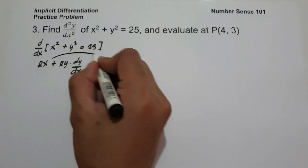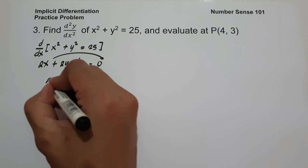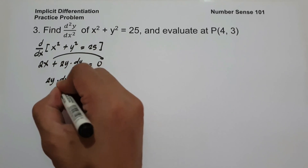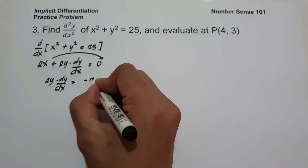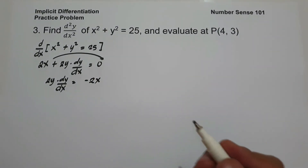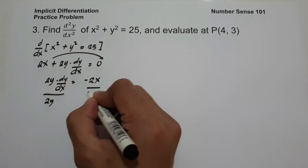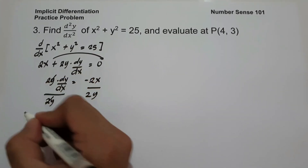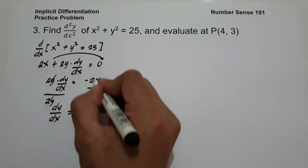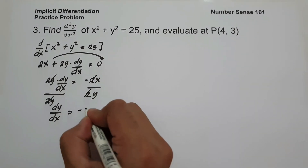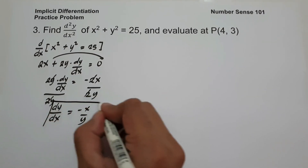Let us move 2x to the other side, giving us 2y times dy over dx equals negative 2x. Dividing both sides by 2y and cancelling, dy over dx equals negative x over y. So this will be the first derivative.